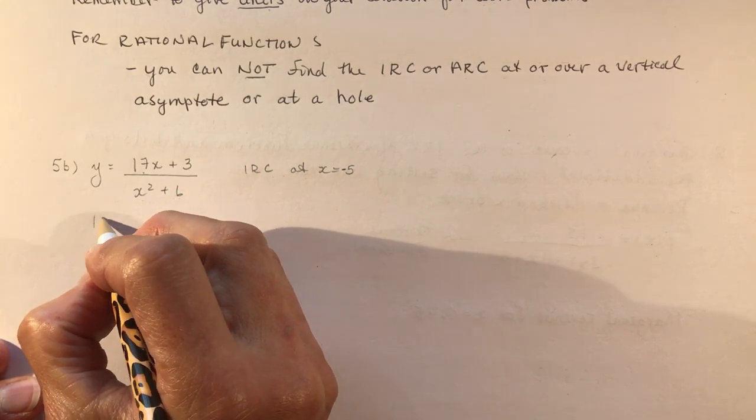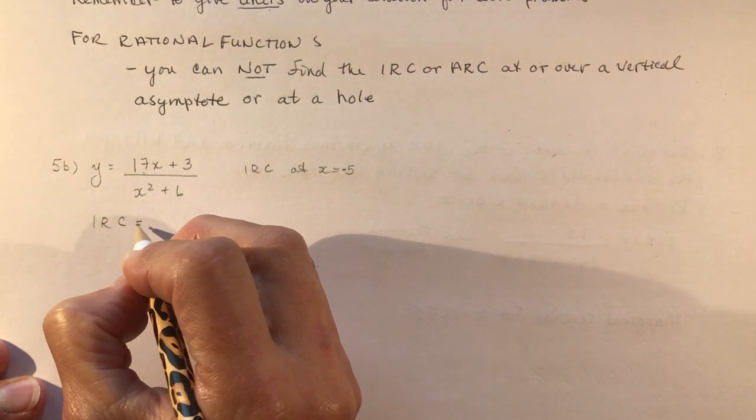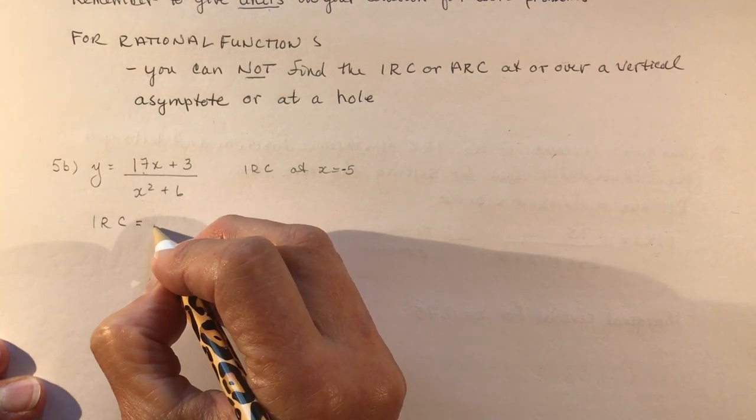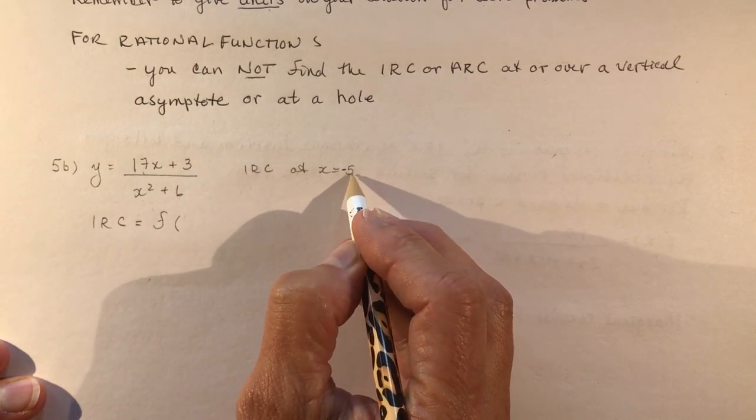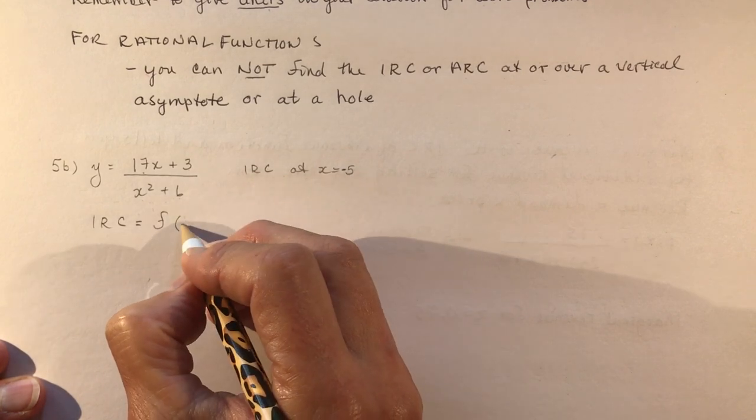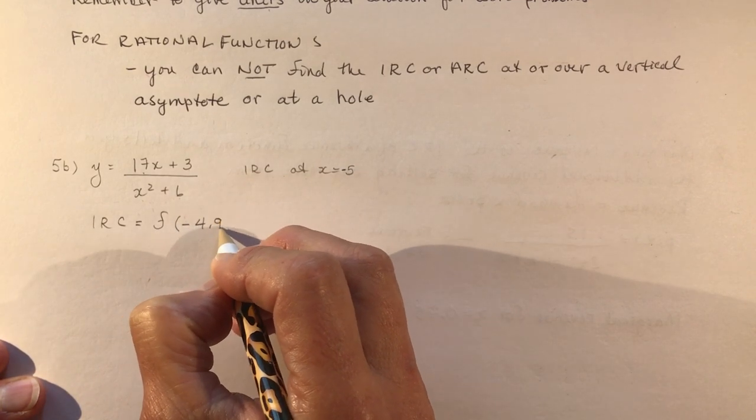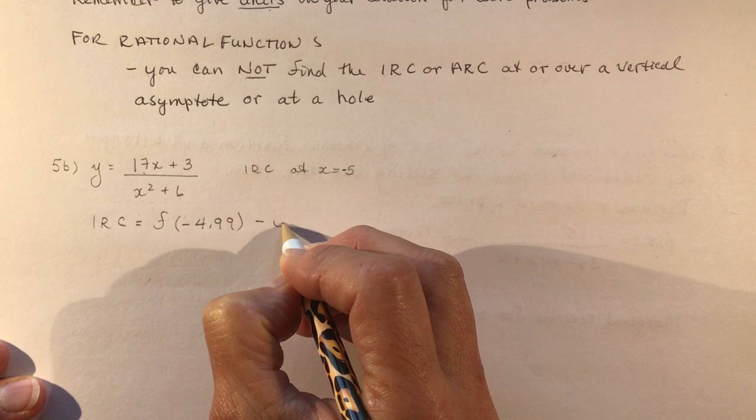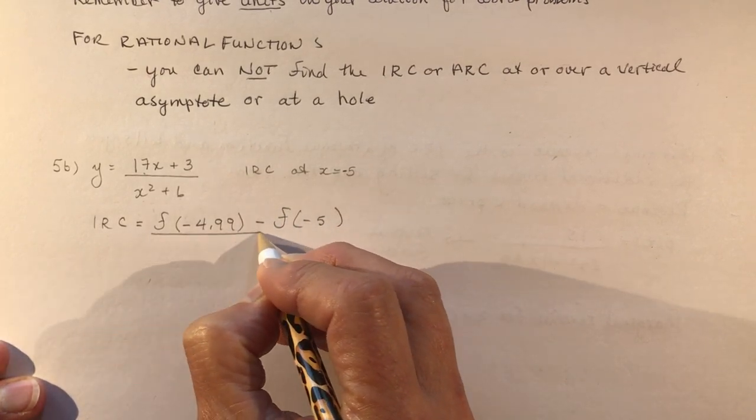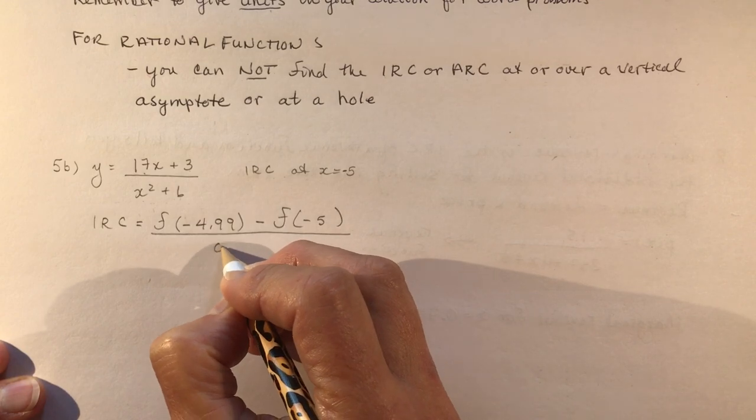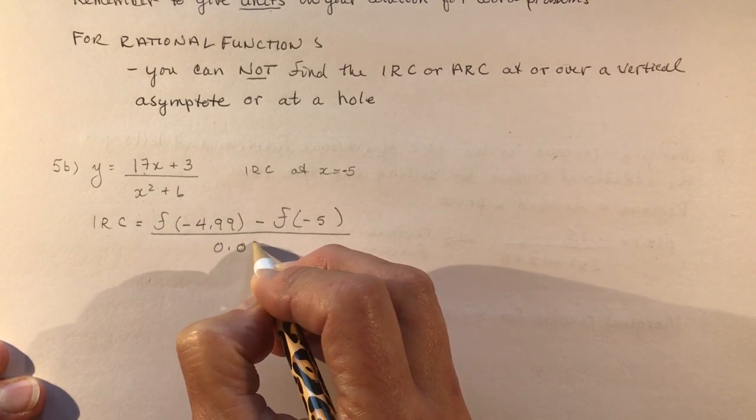So I'm going to use, I'm going to say the instantaneous rate of change is going to be equal to the function at, now I want to be a little bit higher, so it's this plus h, so let's do minus 4.99 minus the function at minus 5 divided by 0.01.